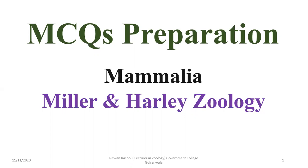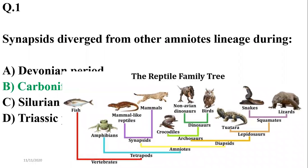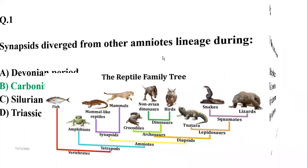Question number one is about the evolution of mammals. Synapsids diverged from other amniotic lineages during the Carboniferous period. Synapsids are the ancestors of mammals, and as shown in this phylogenetic tree, mammals evolved from synapsids. The right option is B, showing the origin in the Carboniferous period.